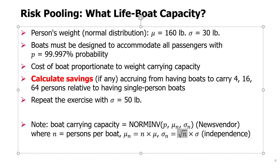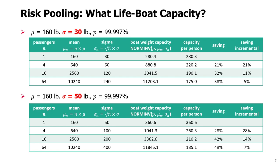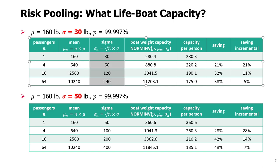If we do those calculations for sigma equals 30, and we consider number of passengers per boat — 1, 4, 16, and 64 — the mean is proportionately increasing, sigma is increasing at a slower rate with square root of n, and then we can calculate using the NORM.INV function the boat capacity necessary to accommodate one, four, sixteen, and sixty-four people.